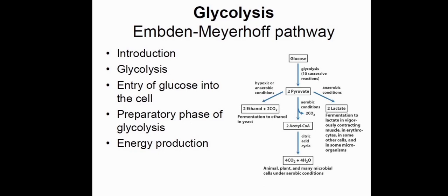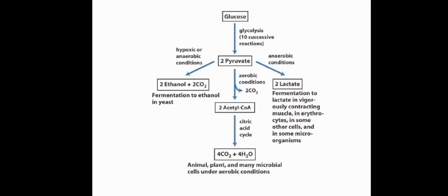This pathway is also named after three scientists — Embden, Meyerhoff, and Parnas — and is called the EMP pathway. Glucose gives two pyruvate molecules. Under aerobic conditions, these form two acetyl-CoA, ultimately yielding CO₂, H₂O, and energy. In muscle, it gives lactate; in anaerobic organisms, it gives ethanol.